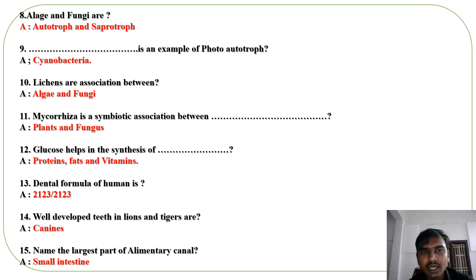Algae and fungi are autotroph and saprotroph. Dash is an example of photo-autotroph. Cyanobacteria. Lichens are association between algae and fungi.